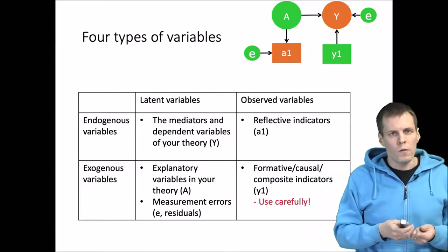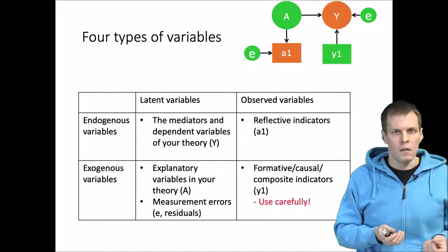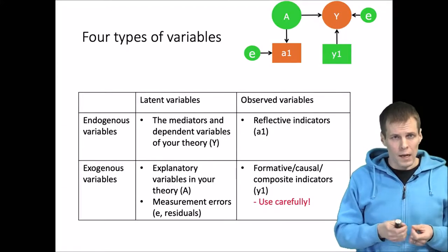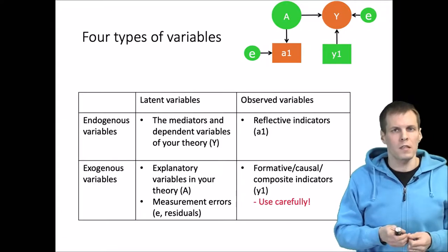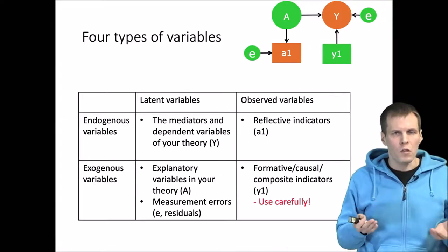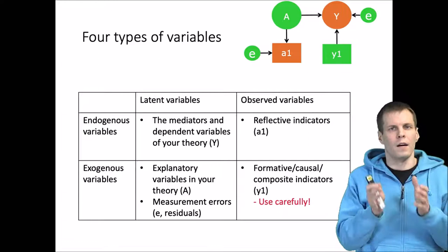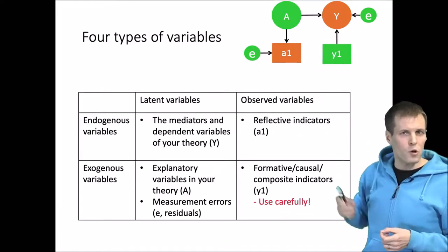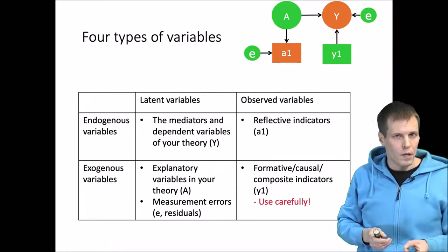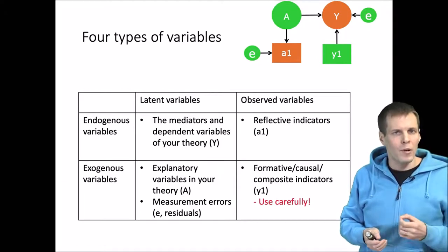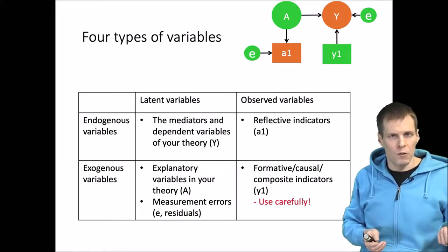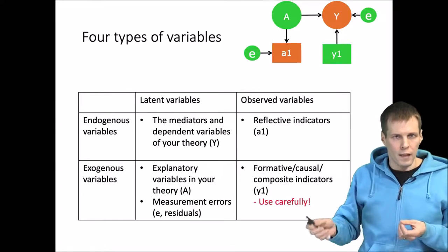This is a bit confusing because the term endogeneity and endogenous variable is used with a slightly different meaning in econometrics. The fact that you have an endogenous variable in a structural equation model does not mean that you have an endogeneity problem. You have an endogeneity problem if you have unmodeled correlations between error terms or any of the predictors of the variable to which that error term belongs.